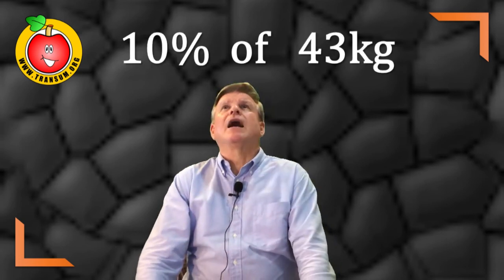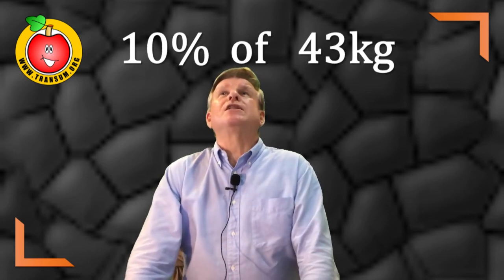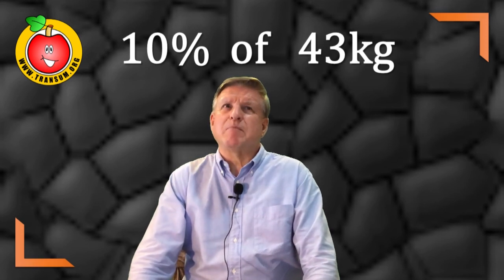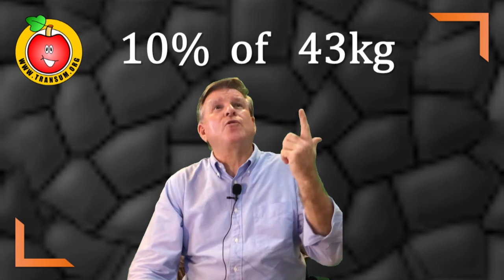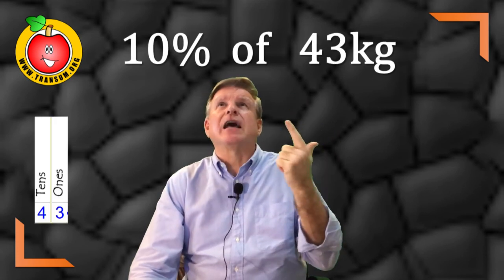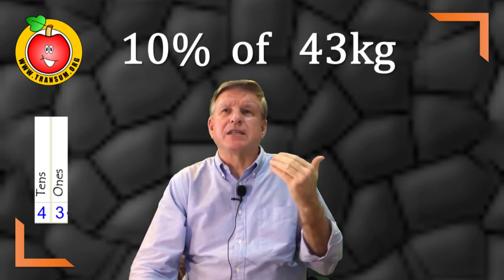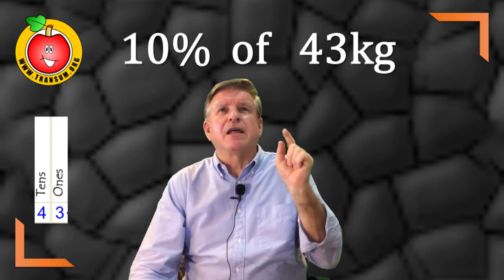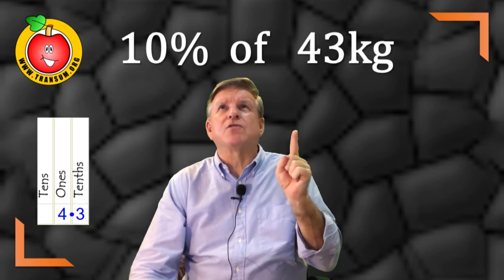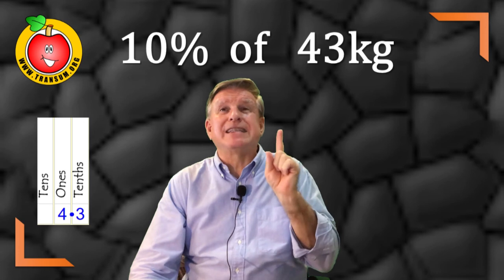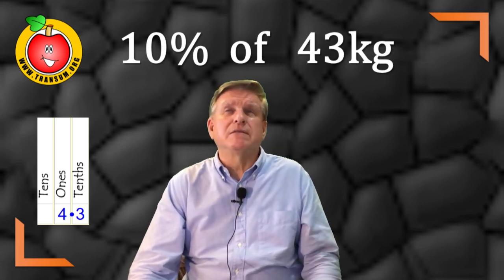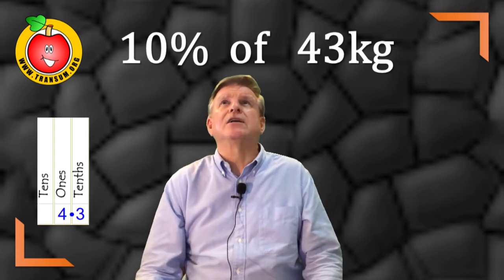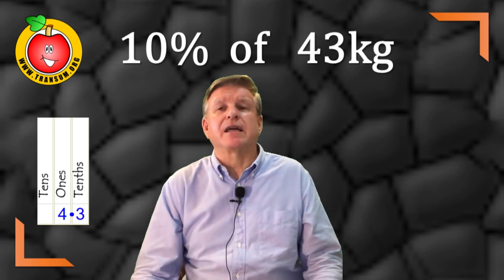10% of 43 kilograms. Well dividing 43 by 10, we have the four that's representing four tens and we have the three representing three ones. So if we divide both of those by 10, the three now doesn't represent three ones. It represents three tenths and the four doesn't represent four tens anymore. It represents four ones. So the answer is 4.3 kilograms.